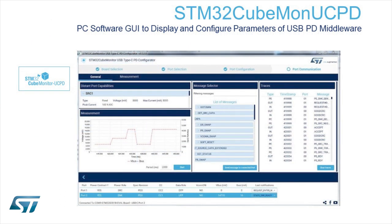We also offer the STM32 CubeMonitor-UCPD. This is a software that permits displaying and configuring the parameters of the USB-PD middleware and also configuring the UCPD IP inside the STM32 G0. In terms of display, you can view measurements of VBUS and IBUS on a graph, look at the trace to see what is happening on the CC lines, and even generate USB-PD protocol messages into the bus.